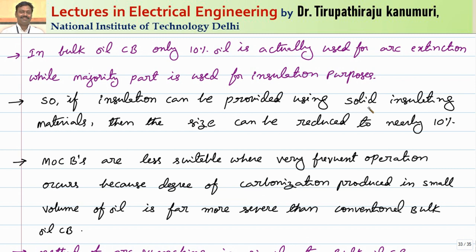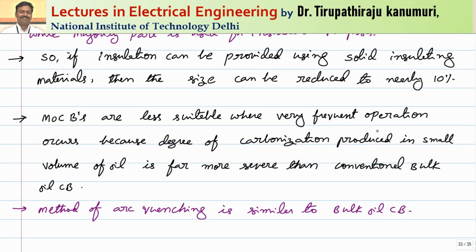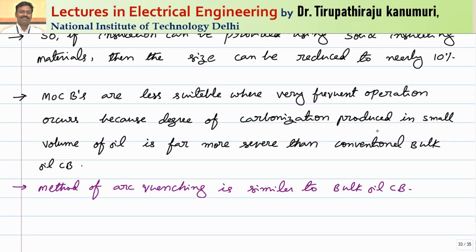After technology developed, many solid insulating materials were invented. They concluded that if insulation can be provided using solid insulating materials, then automatically the size can be reduced to a very small size. When the size decreases, the cost decreases, installation becomes easier, and repairing is also easier. This led to the concept of the minimum oil circuit breaker.